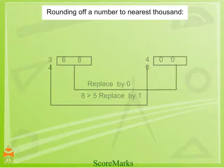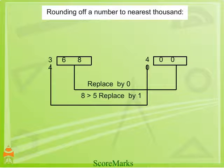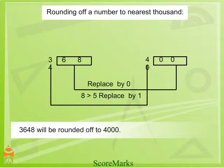Rounding off a number to nearest 1000. To round off to nearest 1000, change the last 4 digits of the given number. Example: in 3648, is 648 nearer to 600 or to 700? 648 is nearer to 700. So the last 3 digits will become 0, and the 4th digit in the 1000th place will increase by 1. That is, 3648 will be rounded off to 4000.